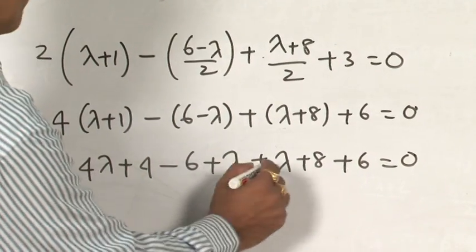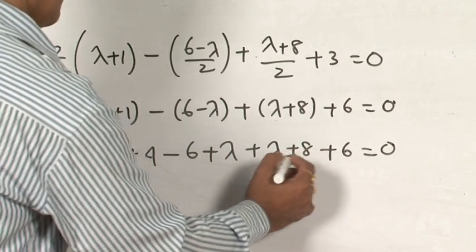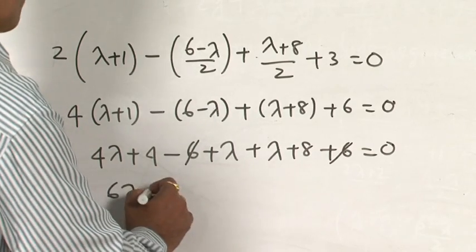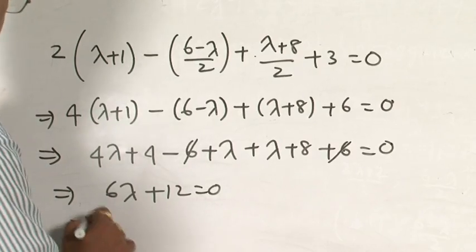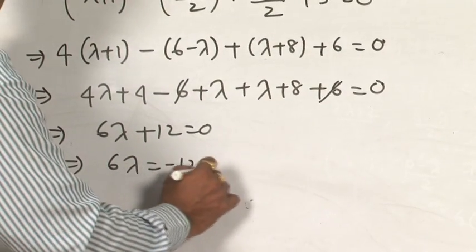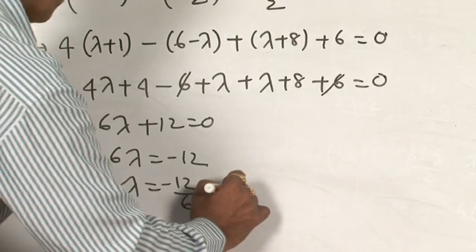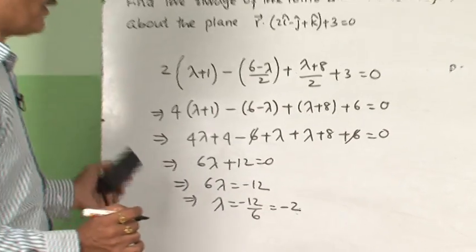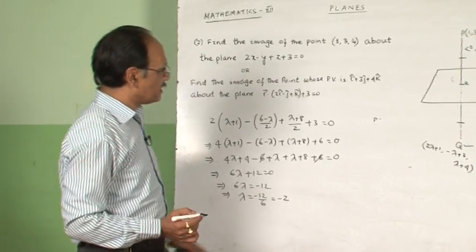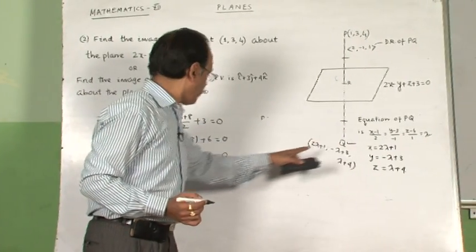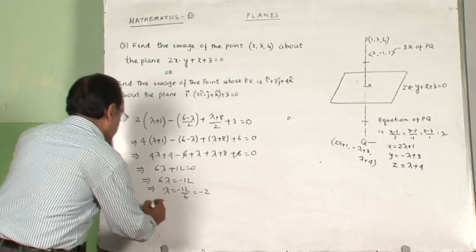Combining like terms: 4λ + 2λ gives 6λ, and the 6s cancel. So 6λ + 12 = 0, which implies 6λ = -12, and therefore λ = -12/6 = -2. We now have the value of lambda.